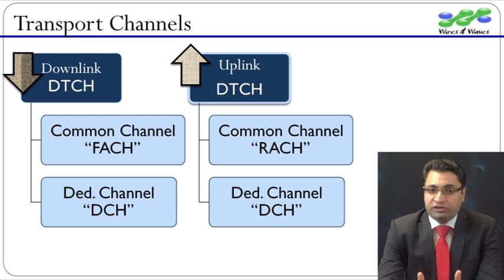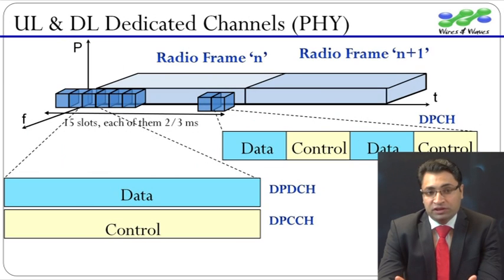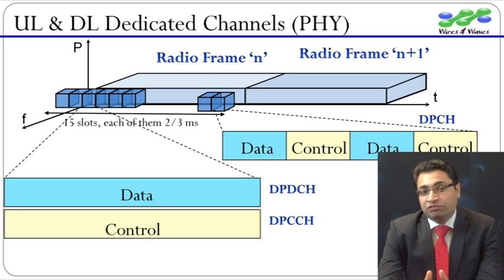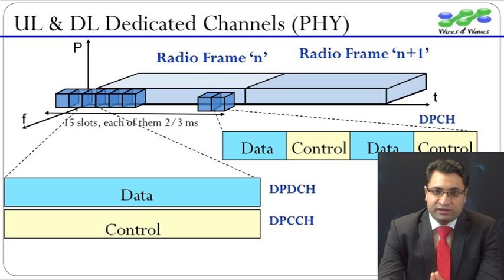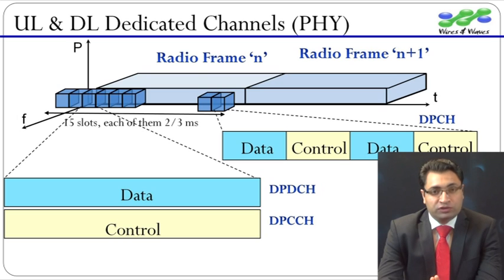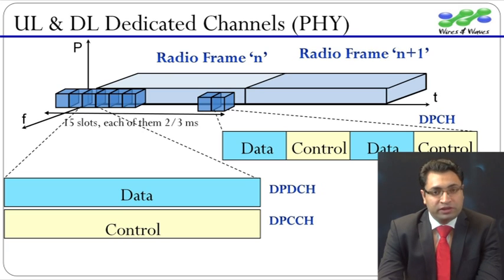Due to the importance of DCH, let us see the physical channels on which these DCH transport channels are mapped. The physical channel used for carrying user data on layer 1 is called DPDCH, and the physical channel used for carrying layer 1 control information is called DPCCH — D for data, C for control. In uplink, data and layer 1 control channels are sent on two separate channelization codes, whereas in downlink, they are multiplexed on the same code but in a time-division multiplexing manner.